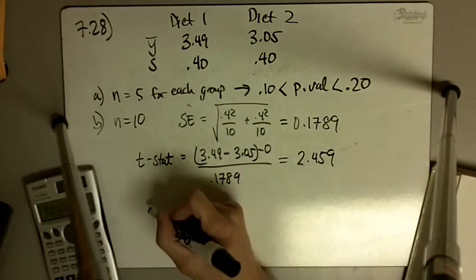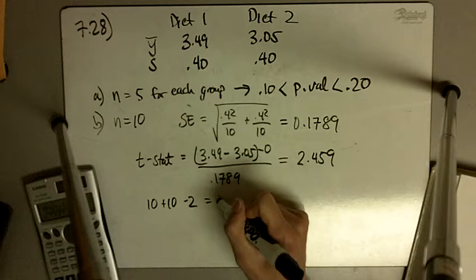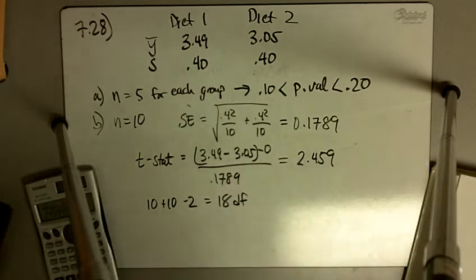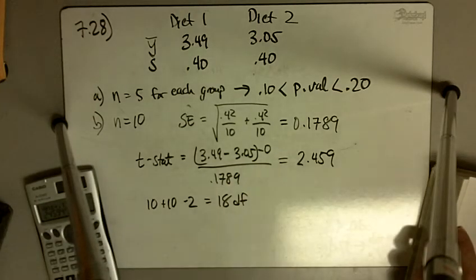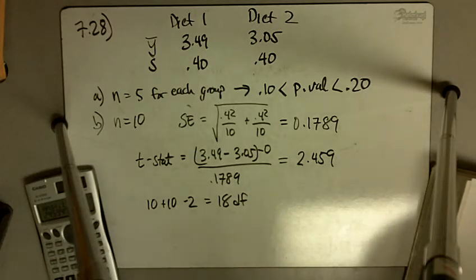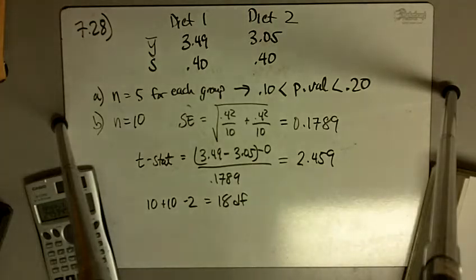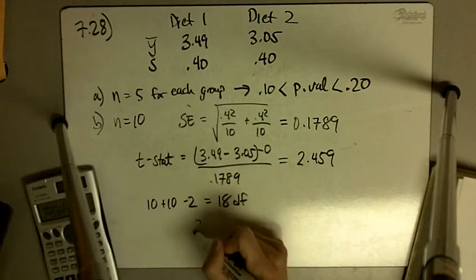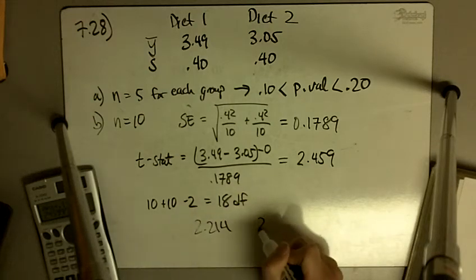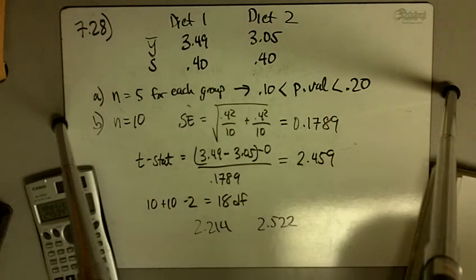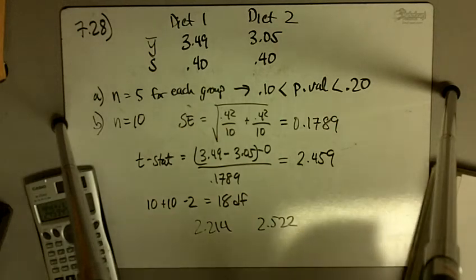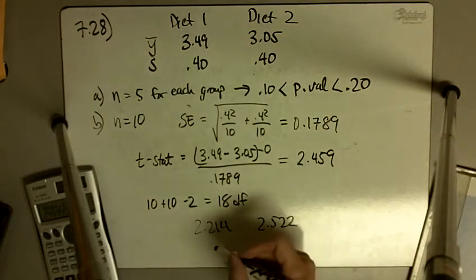2.459, we now have 10 plus 10 minus 2. We have 18 degrees of freedom. So looking up 18 degrees of freedom, 2.459. That lies in between 2.205 and 2.539. Wait, oh, 2.214 and 2.552. 2.214 is 2% and 1% in the upper tails, upper tail probability.